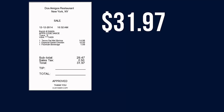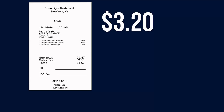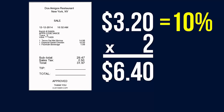To quickly calculate ten percent, most people know you just move the decimal place one over. You'll get thirty-one point one nine seven — round up and that becomes three dollars and twenty cents. That's ten percent. Now to get twenty percent, all you have to do is double it: six dollars and forty cents.